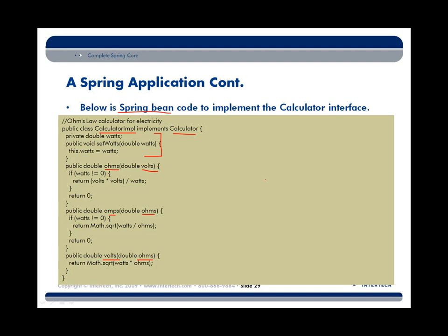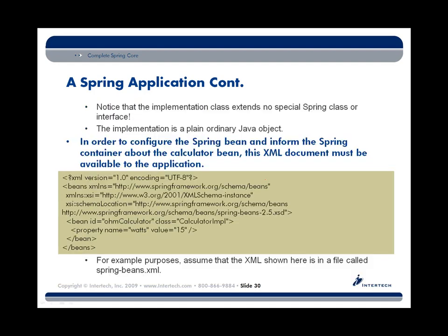How does that watts get set up with a value? We'll come to that in just a second. Our CalculatorImpl and interface have been set up. Now, the important piece of how this bean is going to be used is dictated by configuration. We have to tell the Spring container that is going to use this new CalculatorImpl class. We do that, in this particular case, through an XML document. You could also use annotations, but we're going to use simple XML — which is really how Spring started — to configure our Spring bean called CalculatorImpl.